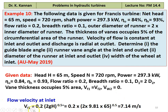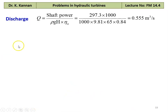We calculate the flow velocity at the inlet. Vf1 equal to flow ratio into square root of 2gH, which is 0.2 into 2 into 9.81 into 65 to the power 0.5 equal to 7.14 meters per second. And the discharge from the definition of overall efficiency: Q equal to shaft power divided by rho g H into overall efficiency, which is 297.3 into 1000 divided by 1000 into 9.81 into 65 into 0.84 equal to 0.55 meter cube per second.